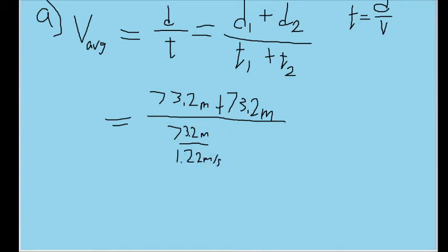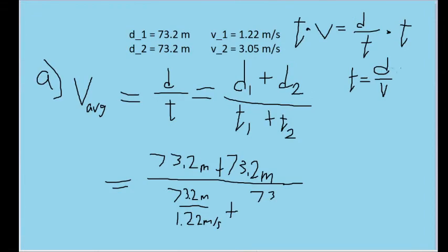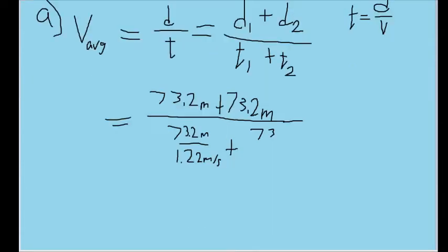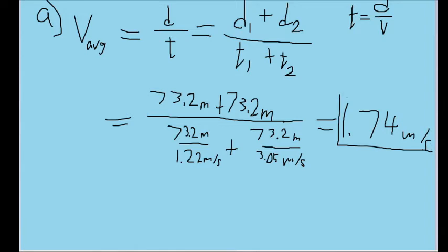And in the denominator, in the same denominator, we are going to add the D2 divided by V2 so that we can get the time for the second segment of the motion. So that'll be 73.2 meters divided by 3.05 meters per second. And now, if we were to plug this entire thing into our calculator, we find that the average speed is equal to 1.74 meters per second. And that is our answer for part A.